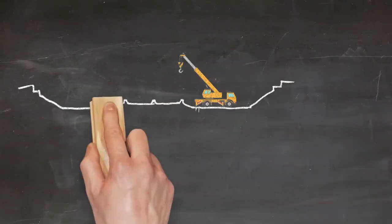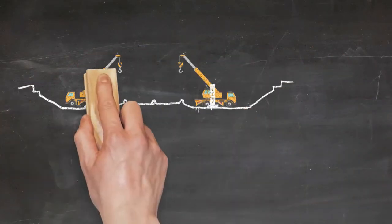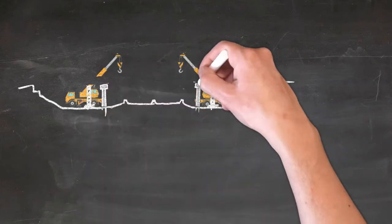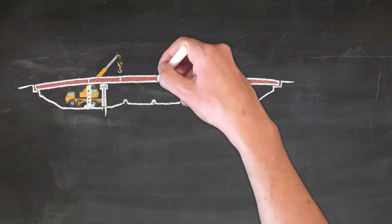On crane-erected girder bridges, this is generally not the case, because of which most EITs don't need to give much thought to how bridges get put together on site.